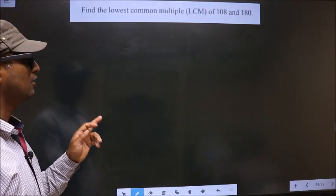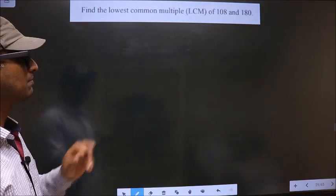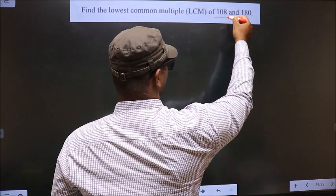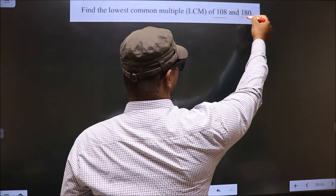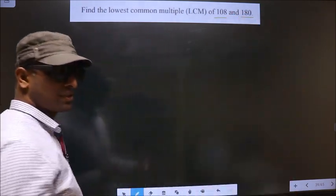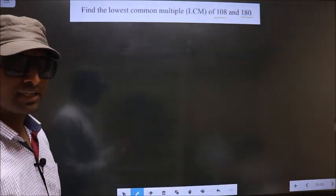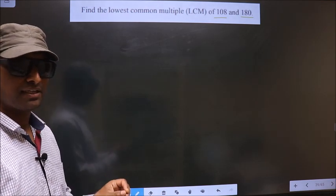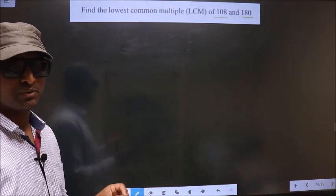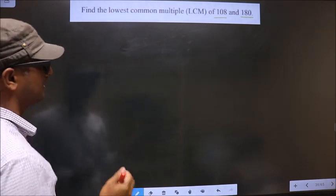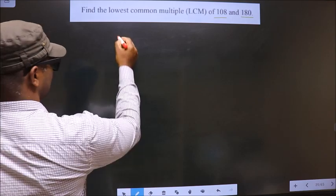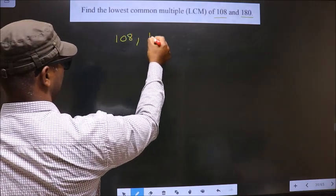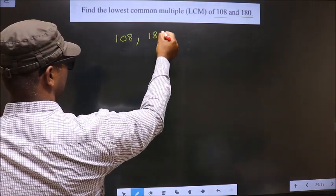Find the lowest common multiple of 108 and 180. To find the LCM, first we should frame it in this way — that is 108 and 180.